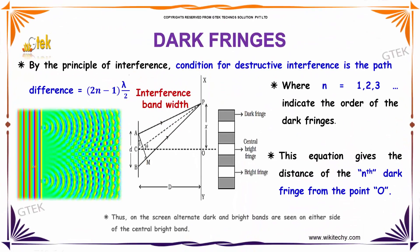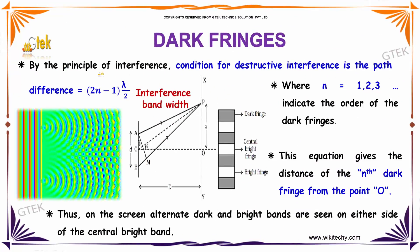If we talk about the dark fringes, by the principle of interference, the condition for destructive interference is a path difference of (2n minus 1) lambda divided by 2, where n equals 1, 2, 3, indicating the order of the dark fringes. This equation gives the distance of the nth dark fringe from point O. Thus, on the screen, alternating dark and bright bands are seen on either side of the central bright band.